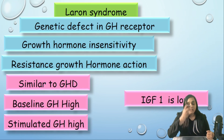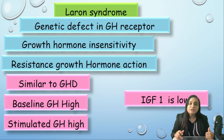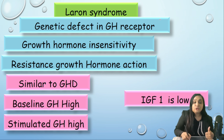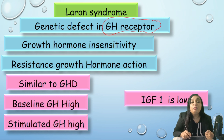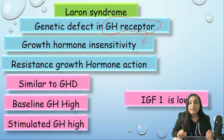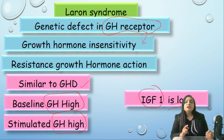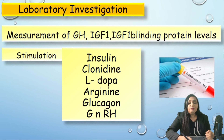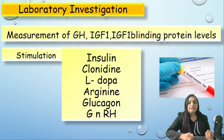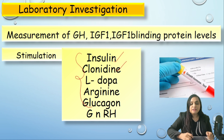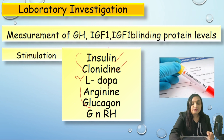If part of a congenital defect, midline facial abnormalities, cleft palate, or cleft lip may be present. An important related condition is Laron syndrome, where GH receptor is insensitive to growth hormone. GH secretion is normal, but the receptor doesn't respond, so even with very high GH levels, growth is poor. Unlike GHD, here baseline GH is high, stimulated GH is high, and IGF-1 is low — and this condition does not respond to GH therapy. Diagnosis requires GH levels, IGF-1, IGF-1 binding protein, and stimulation tests using insulin, clonidine, L-dopa, arginine, glucagon, or GnRH.